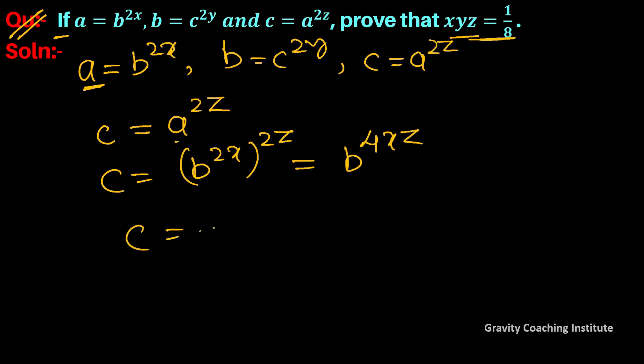So this is b to the power 2y. So c equals c to the power 2y. Power to the power is multiply.